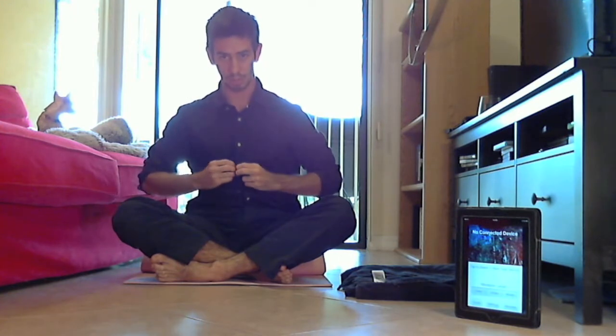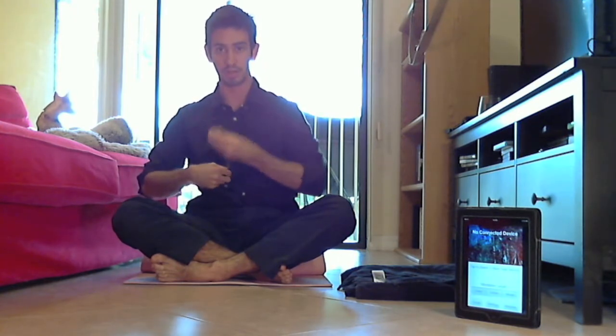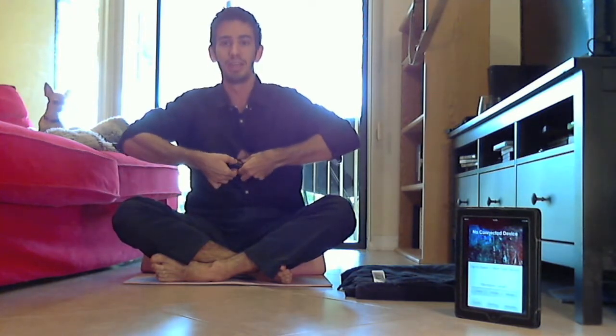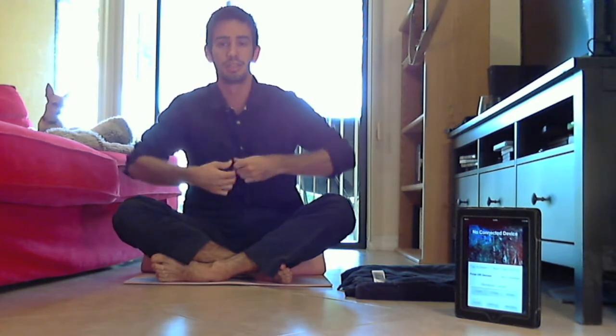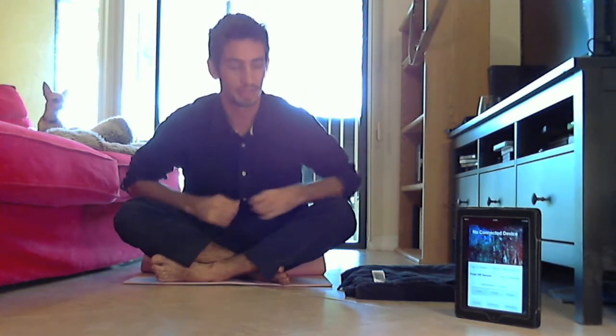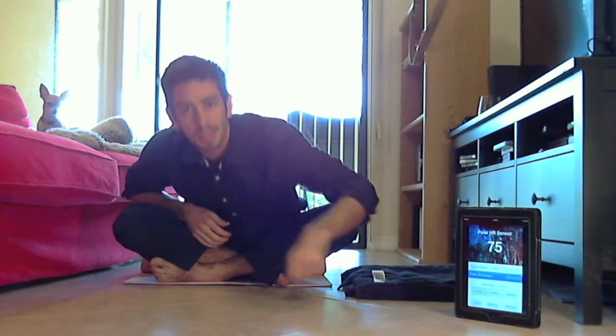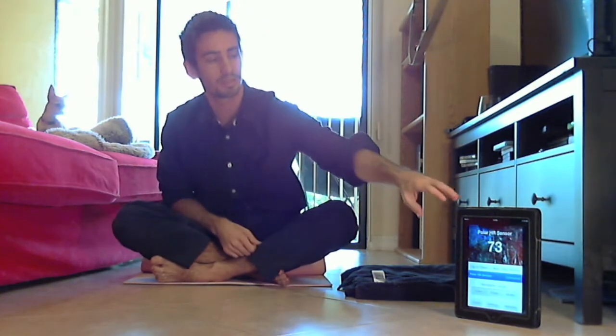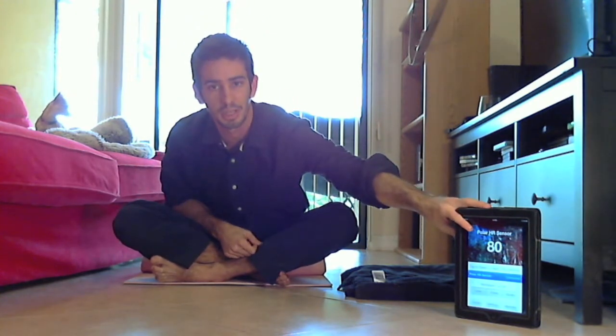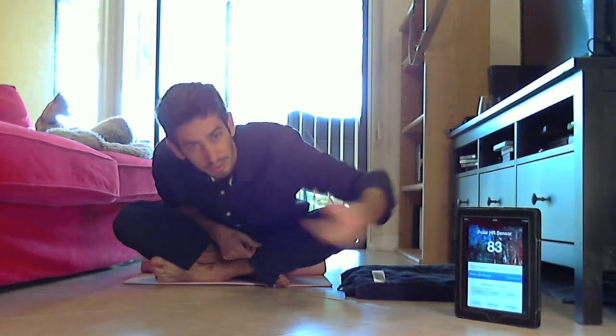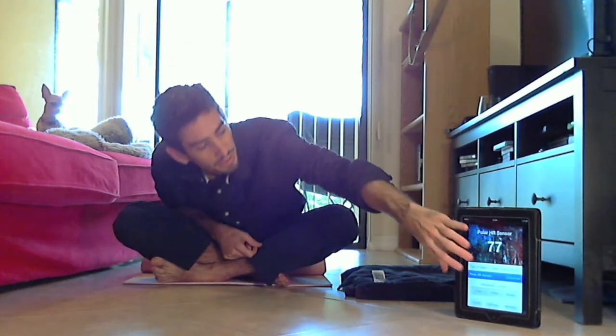I'm going to put on my heart rate monitor. I already have my strap on. Now when I click it in, it should show up on the iPad. Yep, there it is. My Polar heart rate sensor. I tap it, tap it again, and now it's got a live feed. This is actually just the same version as on the iPhone running on the iPad. You can't get it yet, but it should be out in a few weeks.